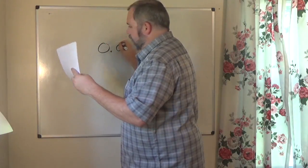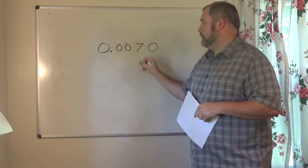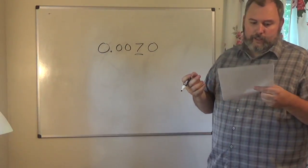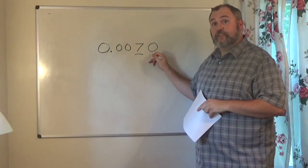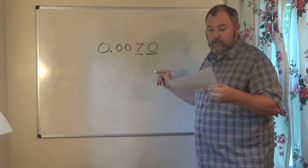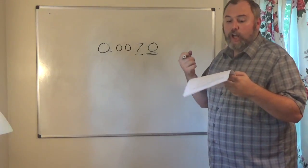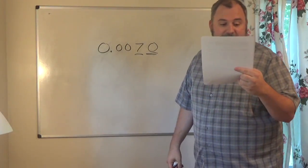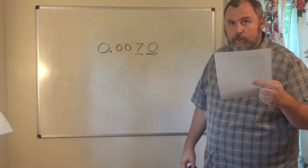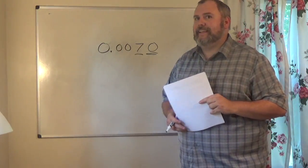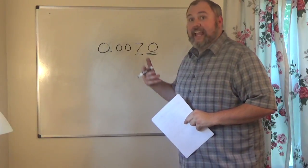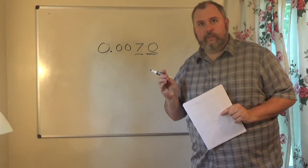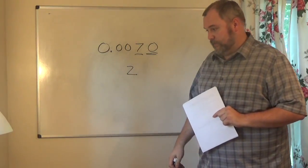Last one — go through your rules. Rule two doesn't help. Rule three: zeros at the end of a decimal are significant — this zero is at the end of a decimal, so it is significant. Rule five: this is not a whole number, so it doesn't help. Rule six: zeros on the left of a number are not significant. The zeros on the left side are not significant. So this number only has two significant digits.